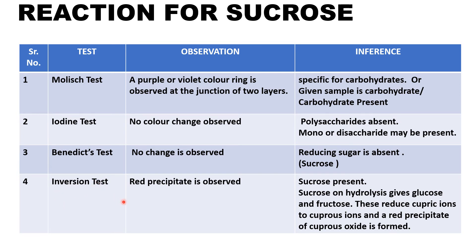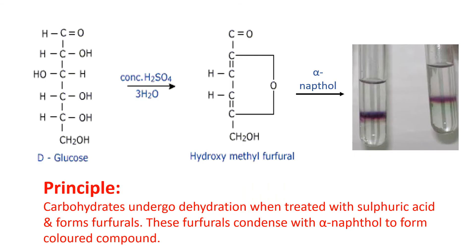By this I get to know the sample could be sucrose, since polysaccharide is absent, it cannot be starch. So the given sample is sucrose. For non-reducing sugar I will do the inversion test. In the inversion test, after neutralizing the sample we perform Benedict's test. The neutralized sample will give red precipitates, as sucrose on hydrolysis gives glucose and fructose, which reduces cupric ion to cuprous ion forming red precipitates of cuprous oxide.